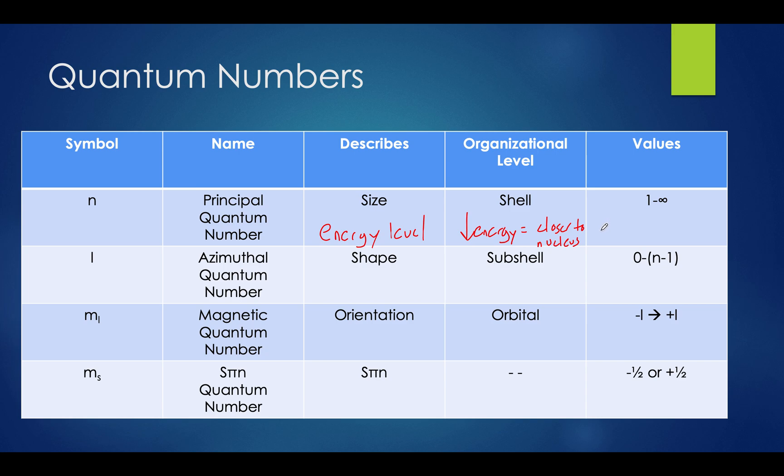And on the MCAT, we will be seeing values of this going from 1 to 7 at most. In theory, it can be any integer from 1 to infinity, but the MCAT will not test you above anything above 7. So let's move on to the next one.